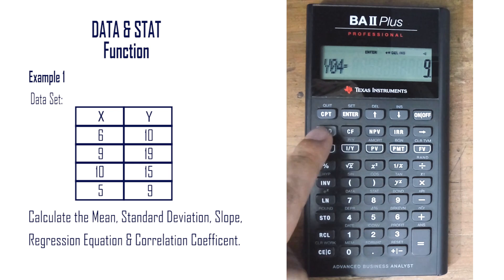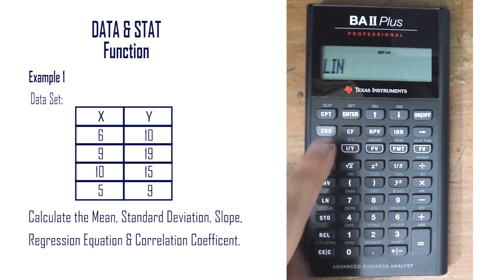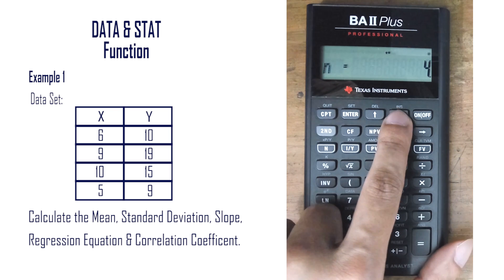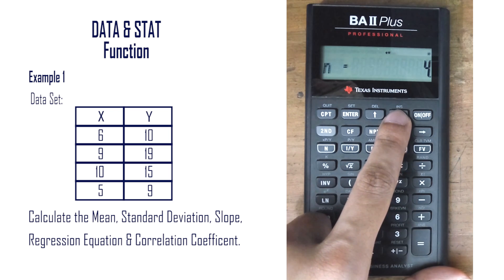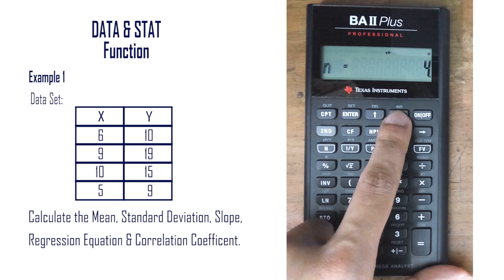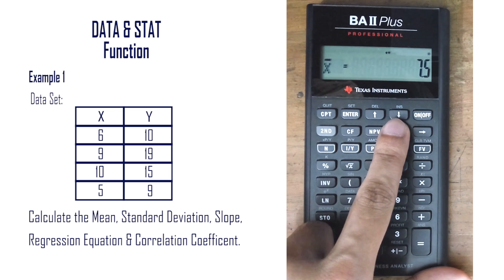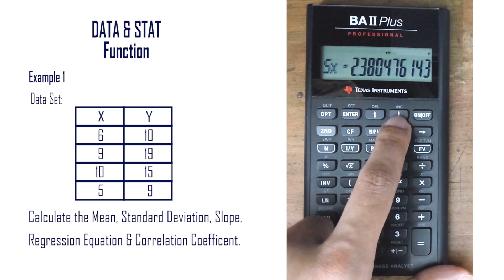Now we go to the stat function by pressing Second 8 and select the LIN mode. After pressing the Next button, we get the value of n, which indicates 4 pairs of values have been entered. Then Next gives x-bar, which shows the mean of x, followed by Sx, which is the sample standard deviation.